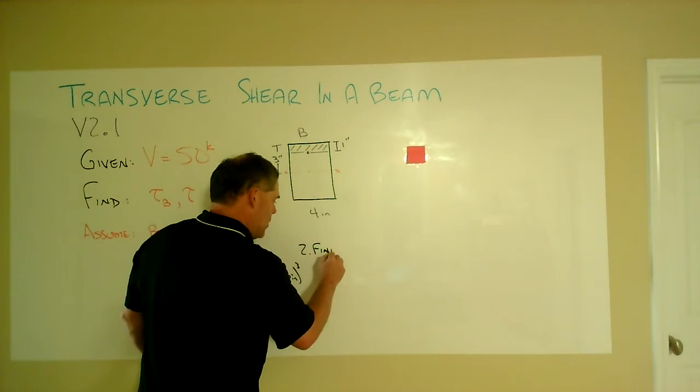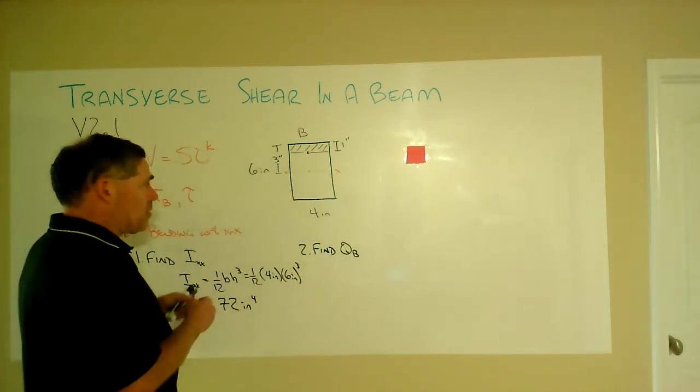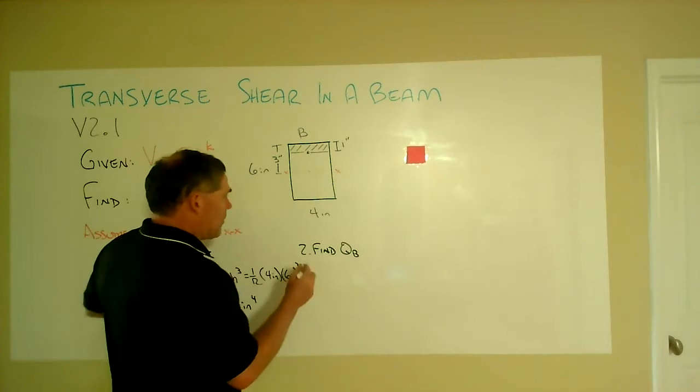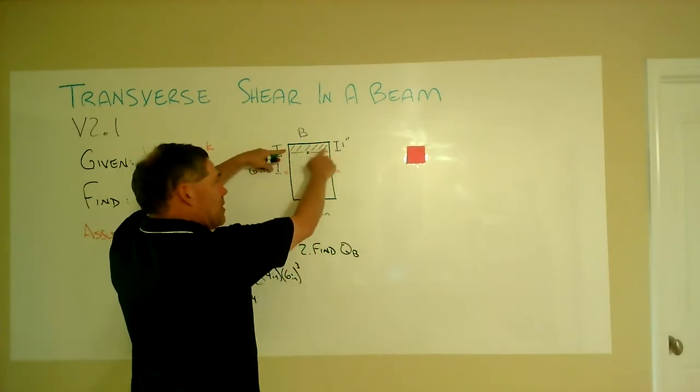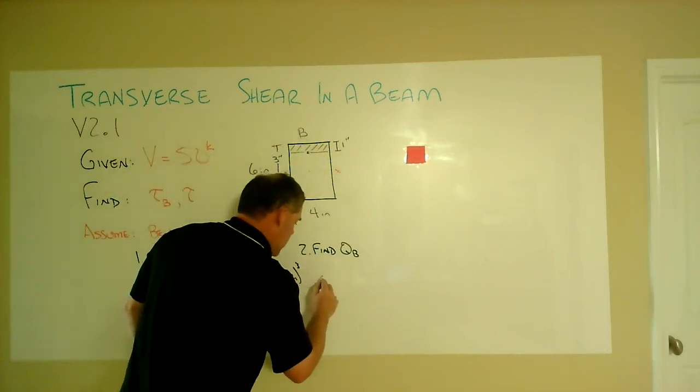The value of Q then is going to be first moment of the area. Here's the area defined as going to the point of interest, the outer portion of it.